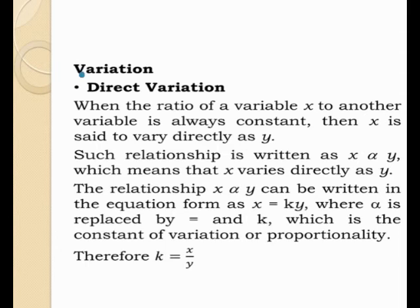Our example number 1 says P varies directly as the square of Q. Therefore, we can say that P is equal to KQ squared. The proportionality sign has been exchanged with the equal sign and the constant K.